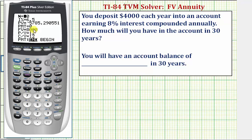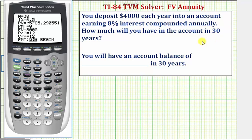We'll enter all the values except future value, which we'll then solve for. N is equal to the number of total compounds over the total time period. Because we have 8% interest compounded annually, the interest is compounded one time per year for 30 years, so N is 30 times 1, or just 30. If it was compounded quarterly, N would be 30 times 4. If it was compounded monthly, N would be 30 times 12. In our case, N is 30, so we press Enter.